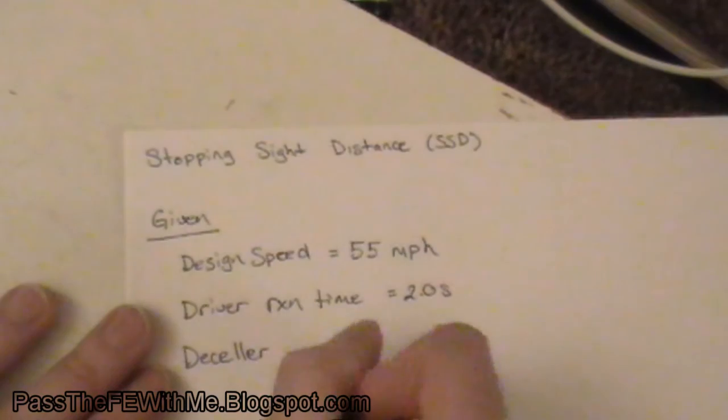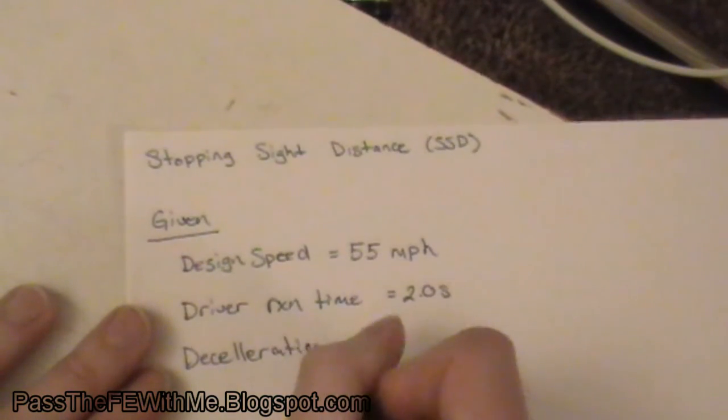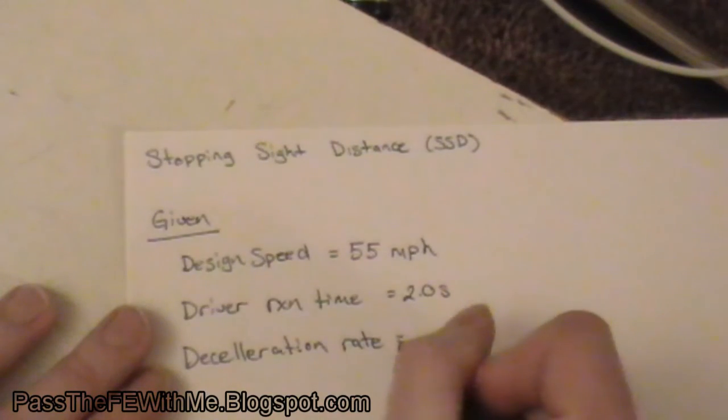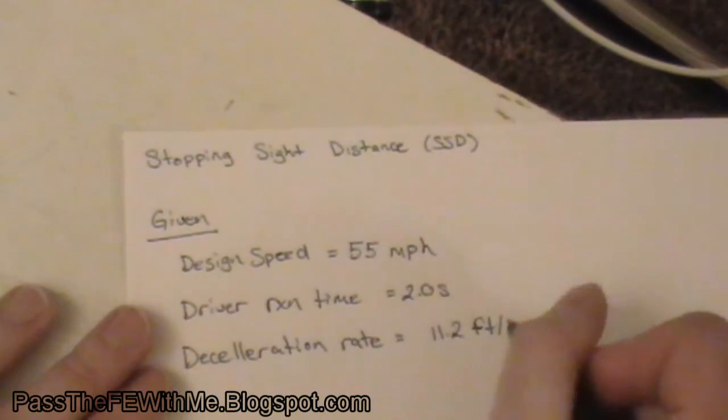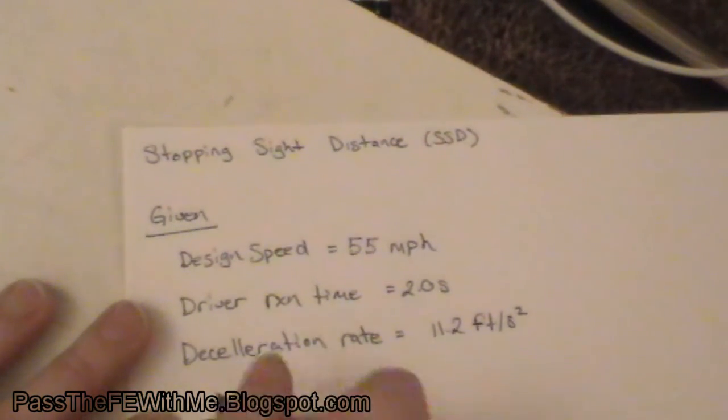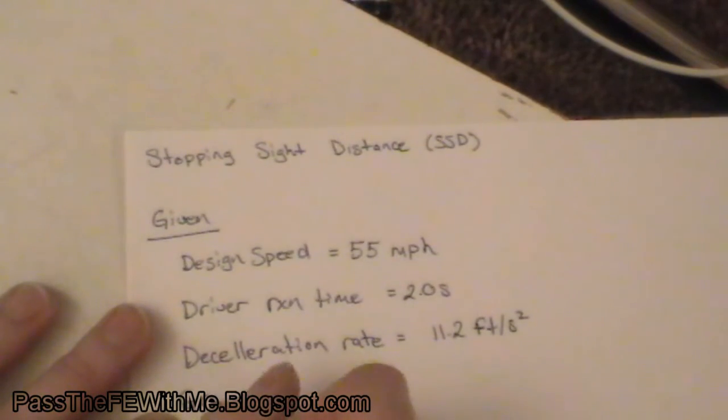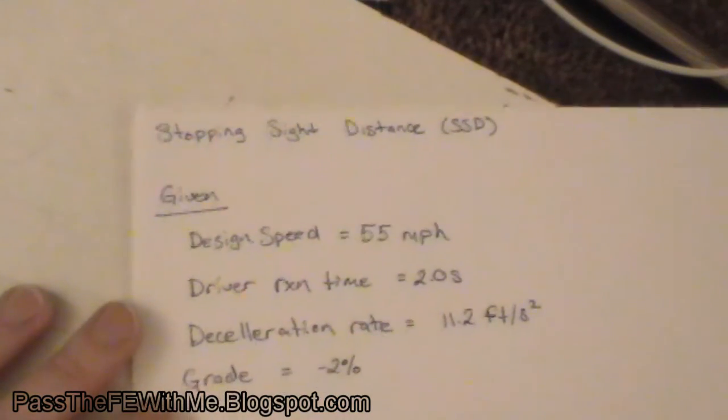Deceleration rate, this is the rate of your vehicle decelerating, equals 11.2 feet per second squared. And grade is minus 2%, which equals a 2% downhill grade.